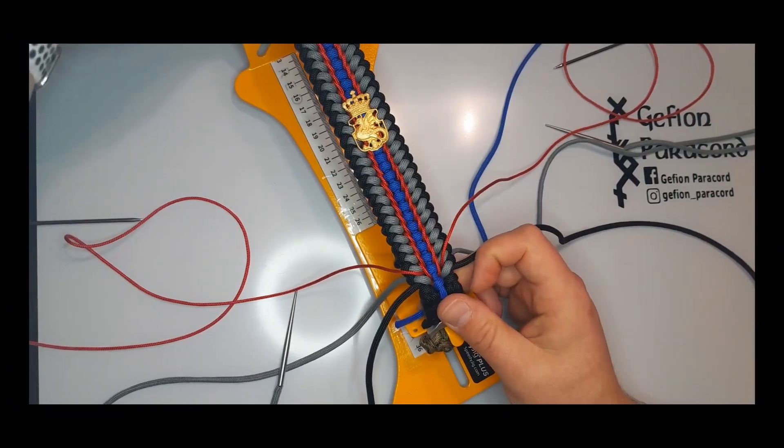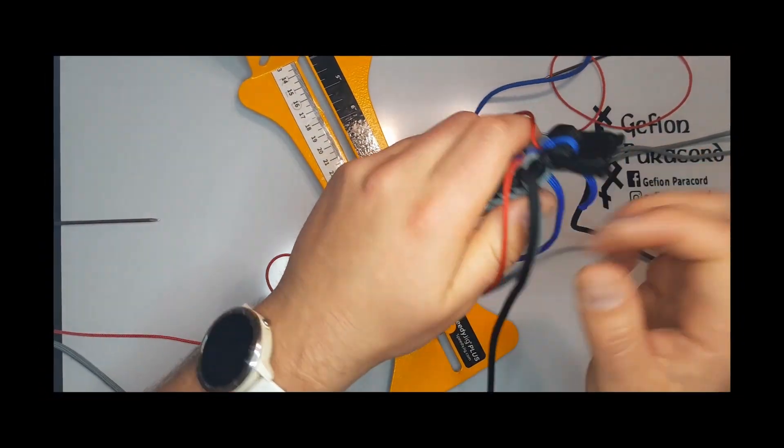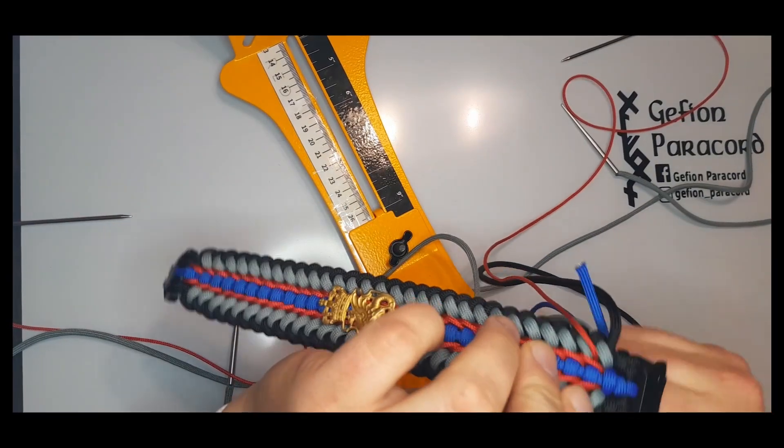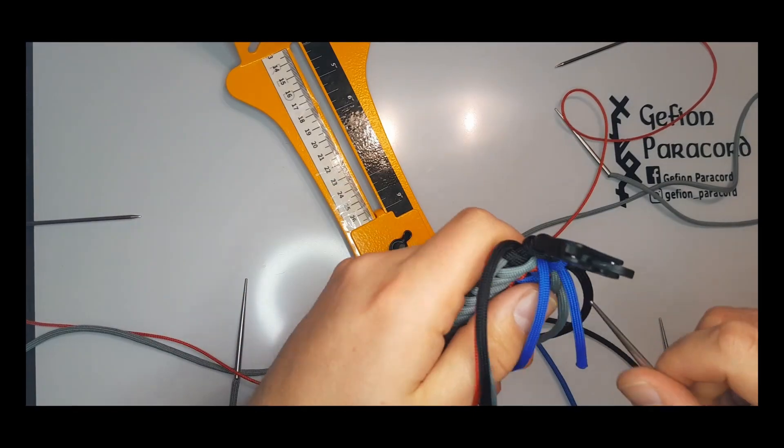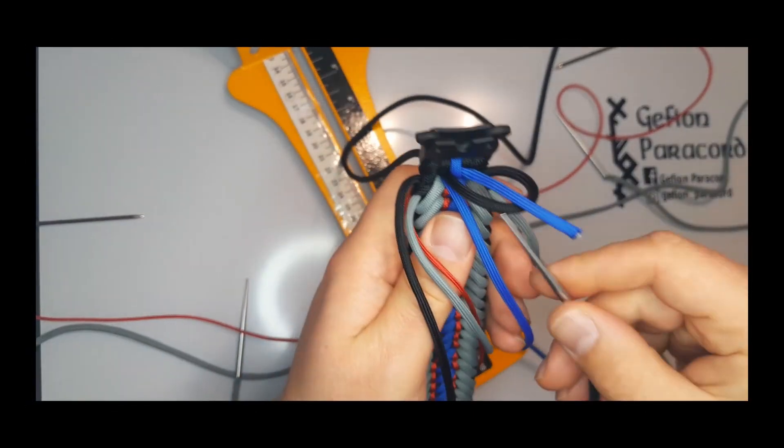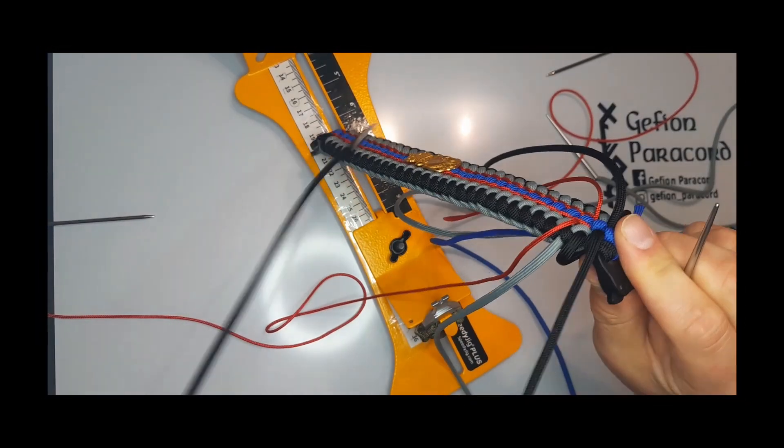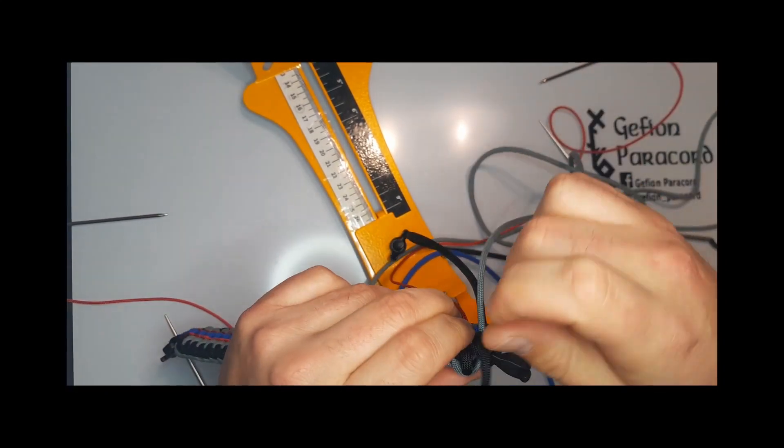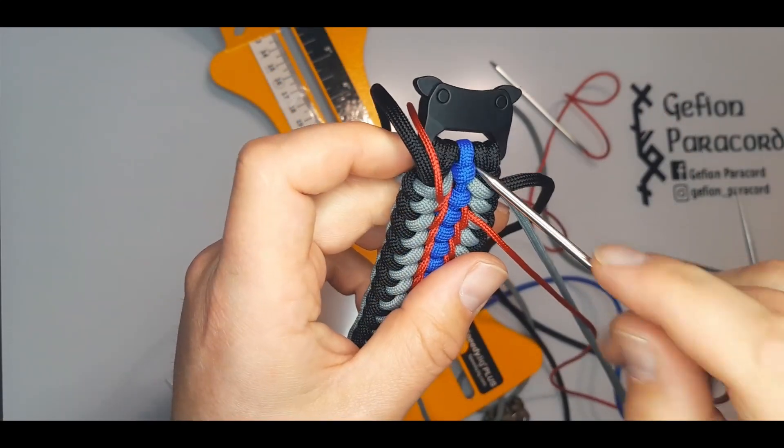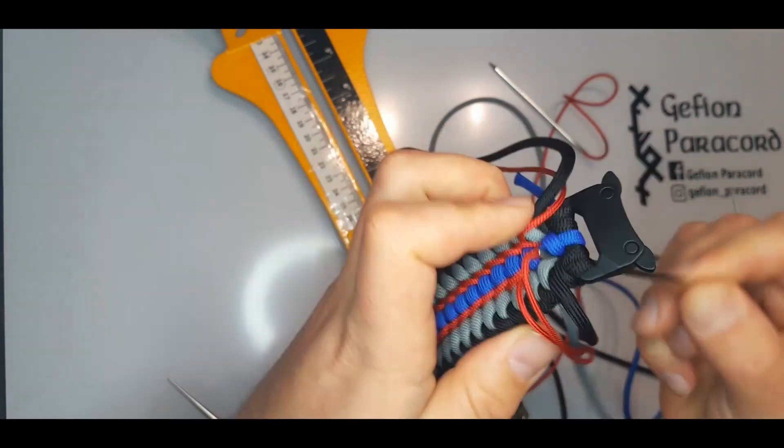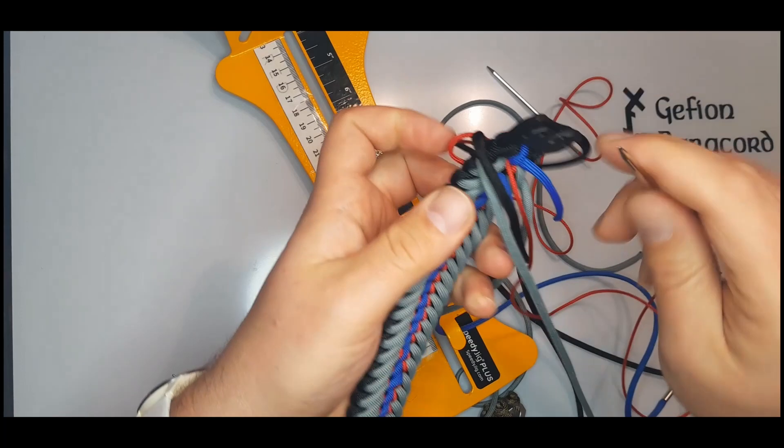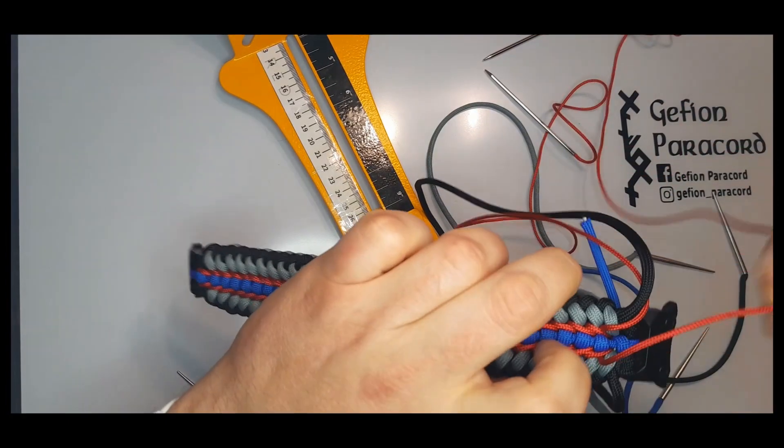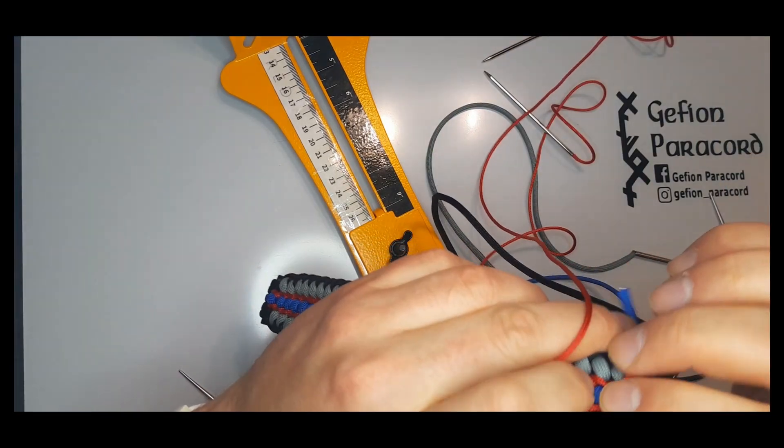So we're almost done with the bracelet. Now it's time to get it off the jig and to finish it up in hand. Continuing the technique, but it's a bit harder when you do it in freehand. This is also by the way why I advise people to have at least five needles if you wanna do this pattern. We are almost done with the whole stitch work thing.